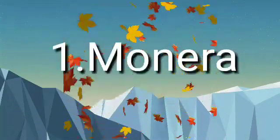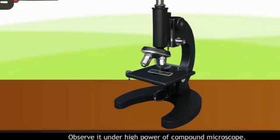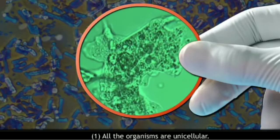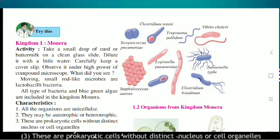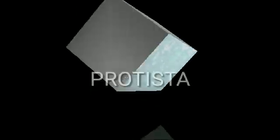Let us see the first kingdom, Monera. Activity: Take a small drop of curd or dilute milk on a clean glass slide, dilute it with a little water, carefully keep a cover slip, and observe it under high power of a compound microscope. Moving small rod-like microbes are Lactobacilli bacteria. All types of bacteria and blue-green algae are included in kingdom Monera. Characteristics: all organisms are unicellular; they may be autotrophic or heterotrophic; and these are prokaryotic cells without a distinct nucleus or cell organelles.